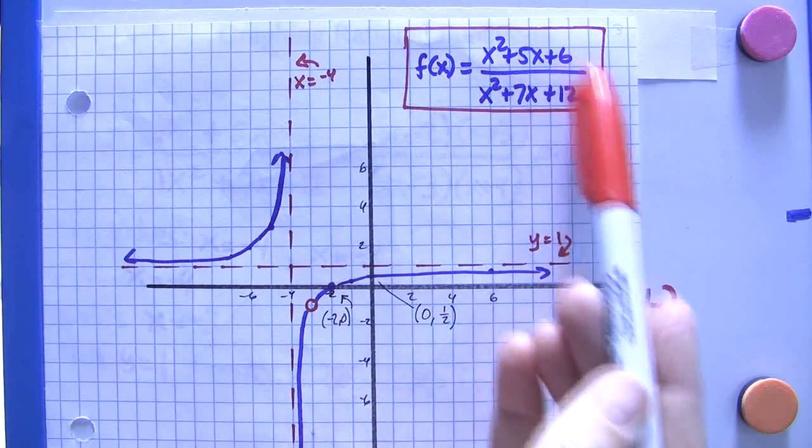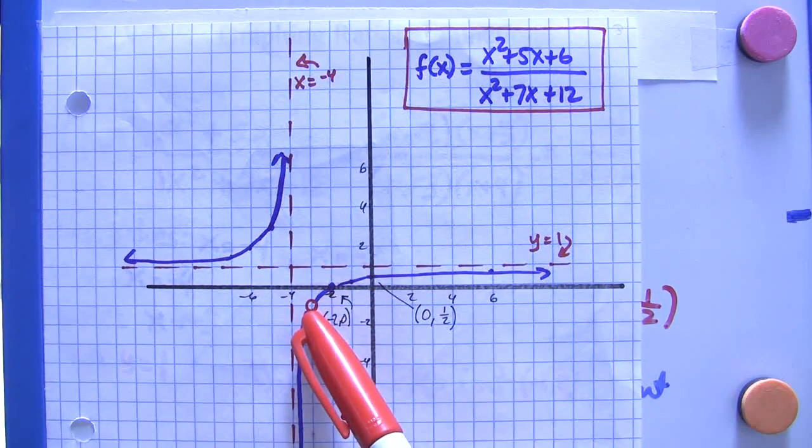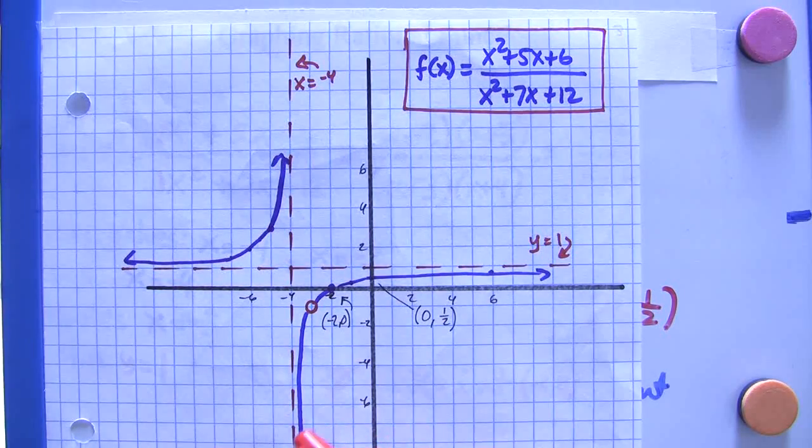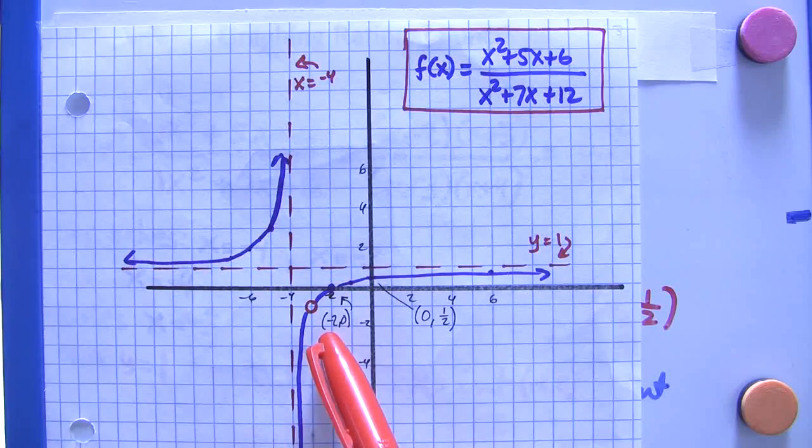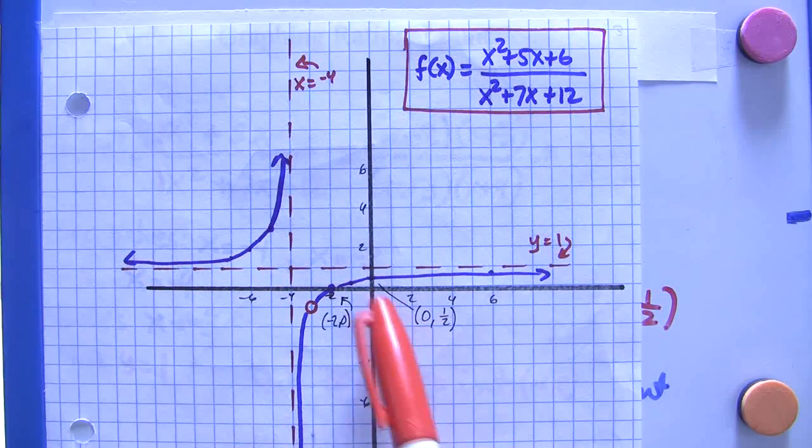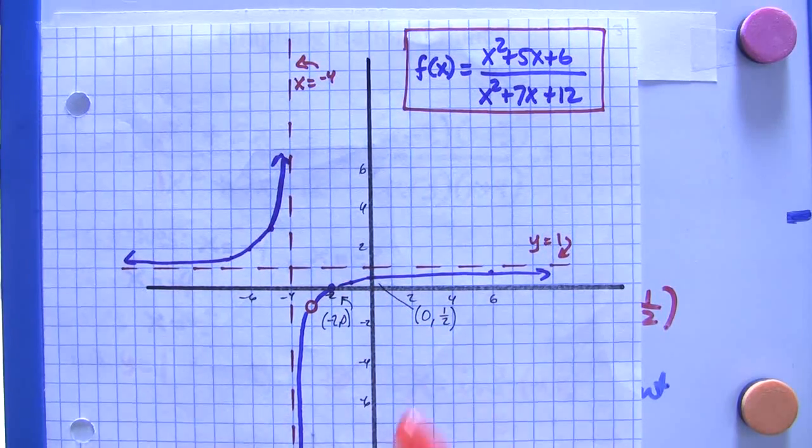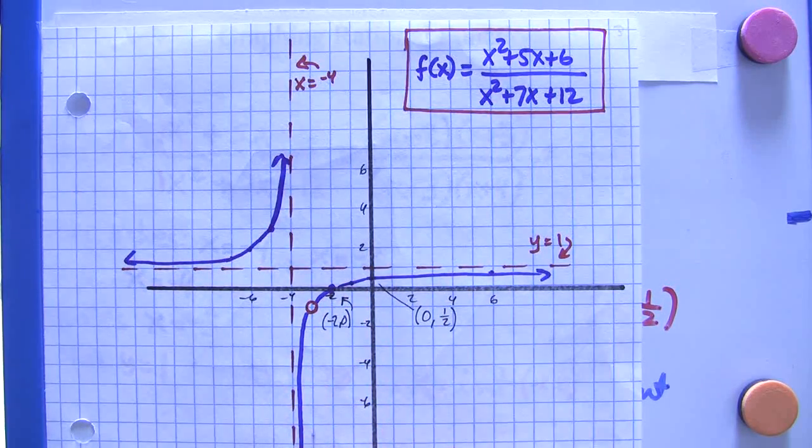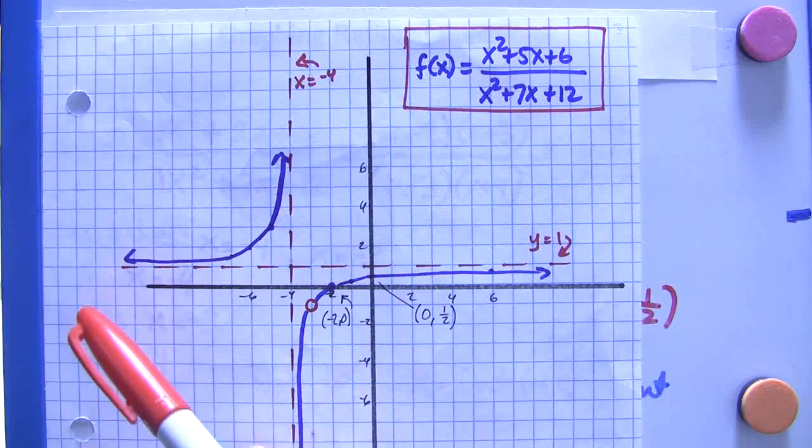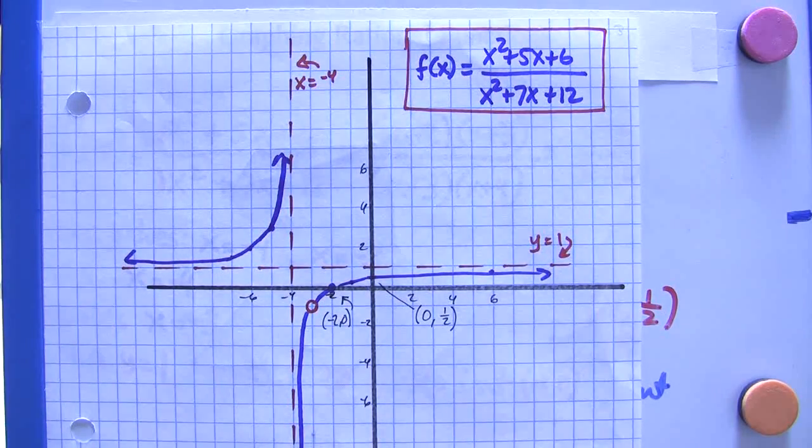And we can plug in negative 3 and find a value, but we have to remember that there's a hole there. The x-intercept is negative 2 in this case. The y-intercept is 1 half. To plot these lines, you can either use a table of values from your graphing calculator, or you can just simply plug in points and find them.